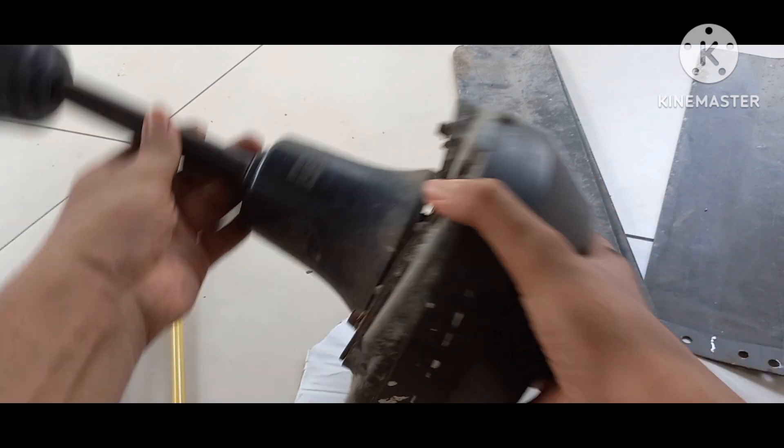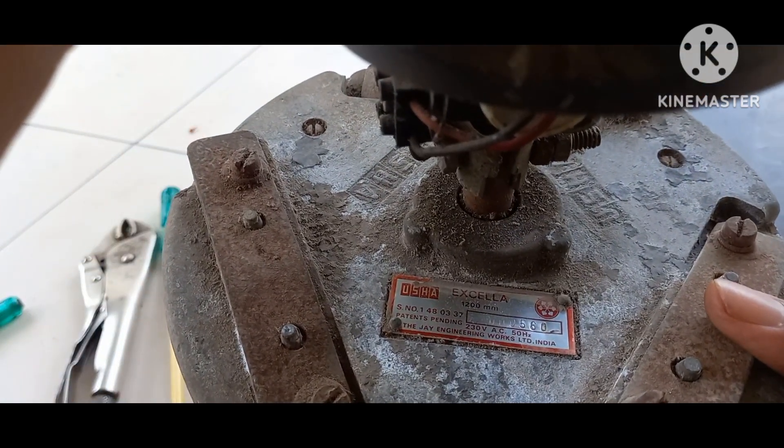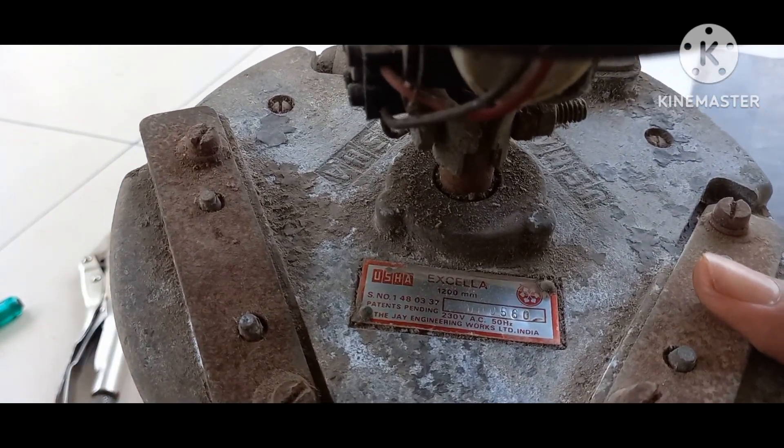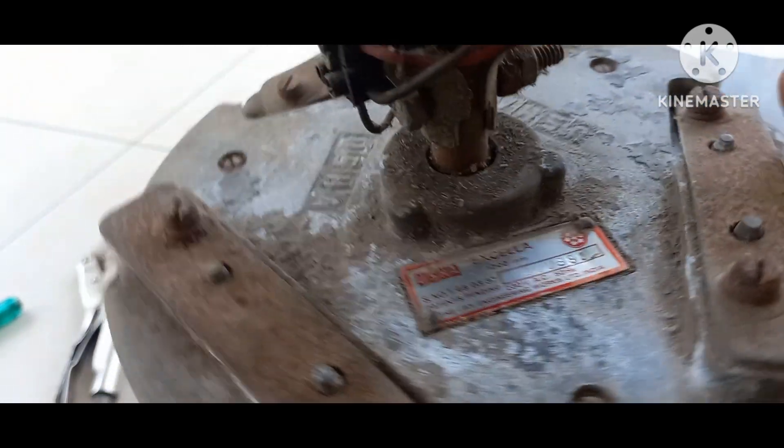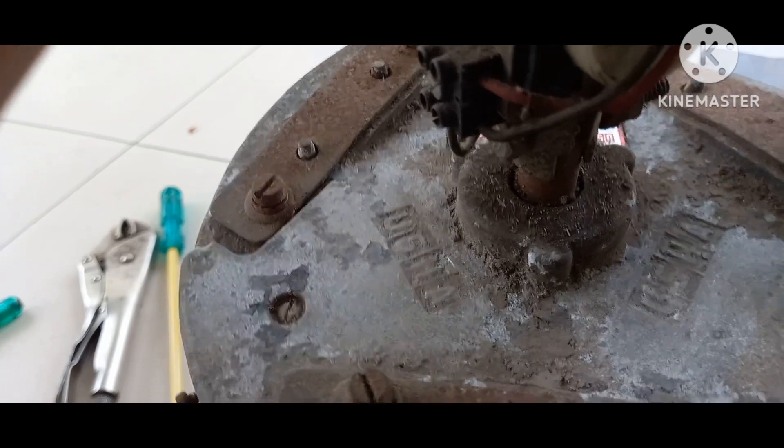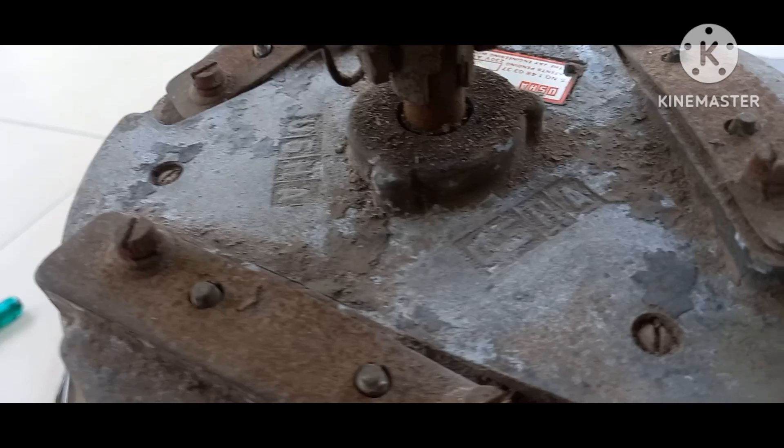The model is USHA Excella. Let me show you - you can see USHA Excella 1200mm, the J Engineering Works. There are two USHA labels deposited on the motor cover on two sides, here and here.